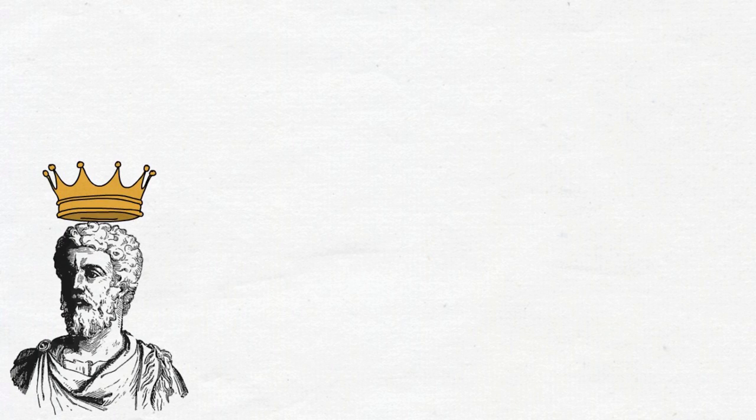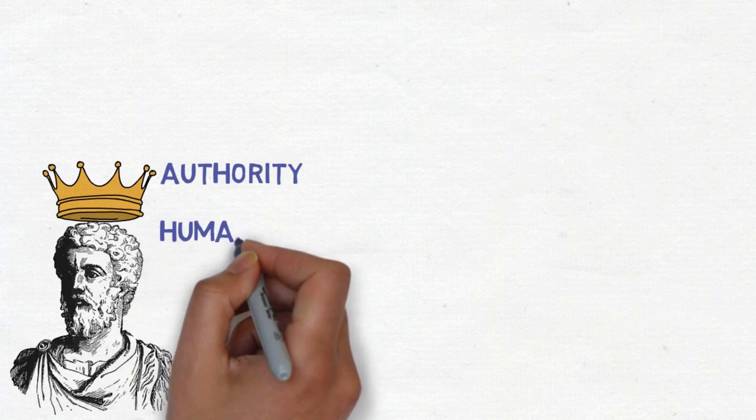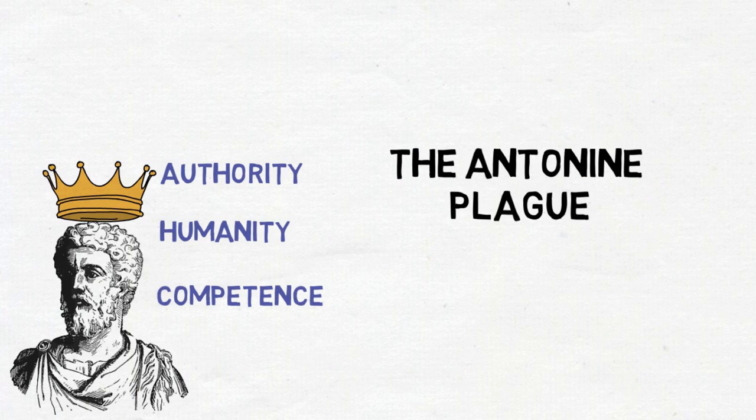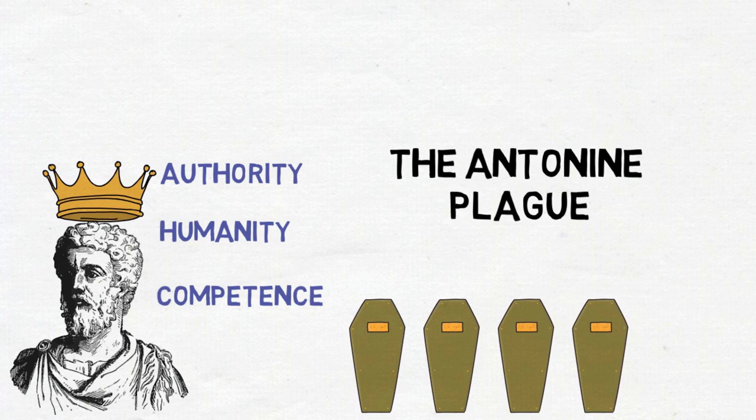Marcus Aurelius was the emperor of Rome during the 2nd century AD, the last in a line of five emperors known to have ruled Rome with authority, humanity and competence. During his tenure, the Roman Empire suffered from a severe pandemic in the form of Antonine Plague that broke out in 165 and devastated the population of the Roman Empire, causing the deaths of 5 million people.